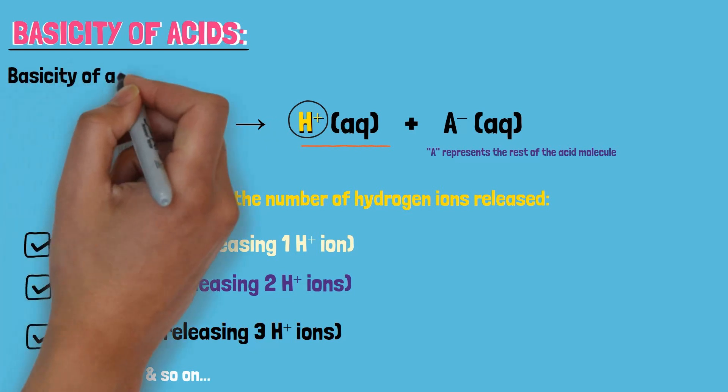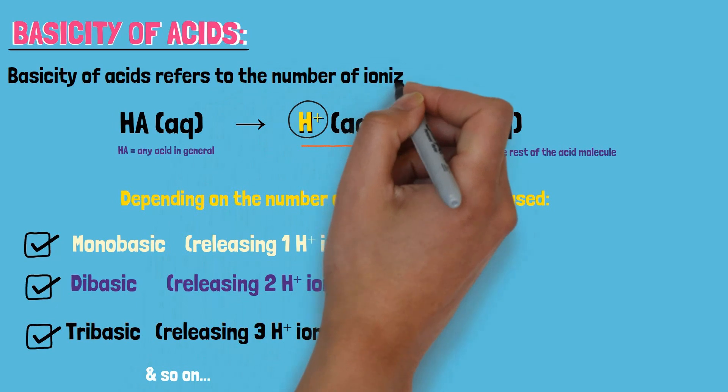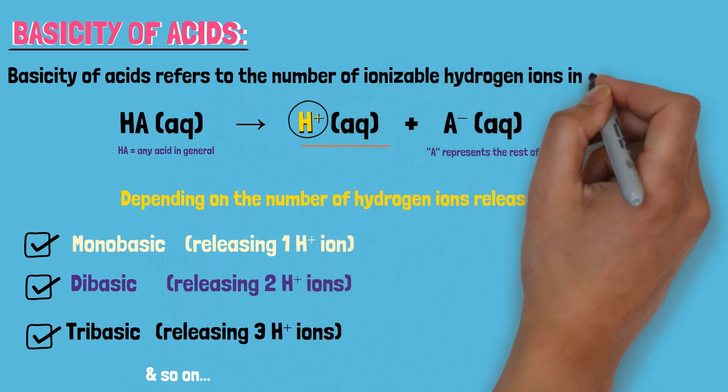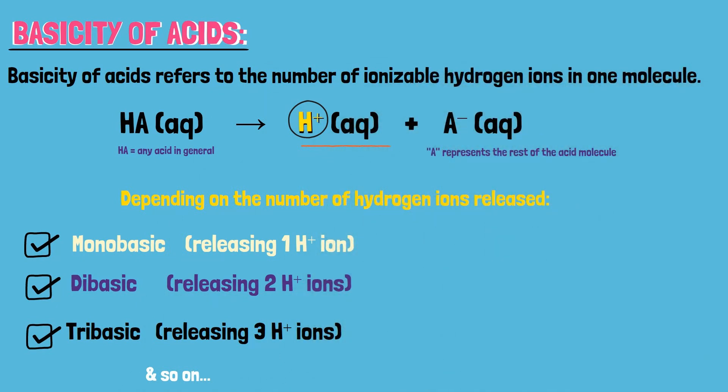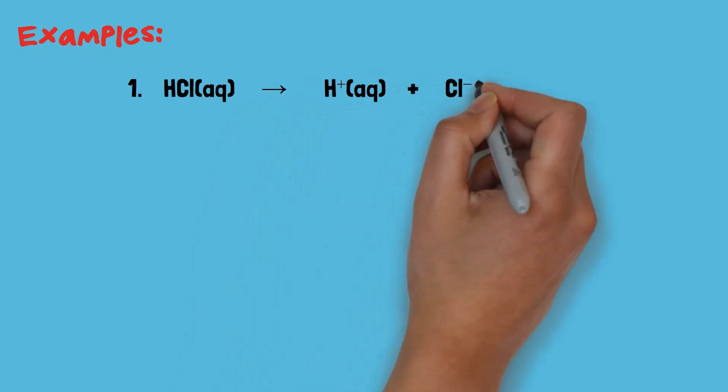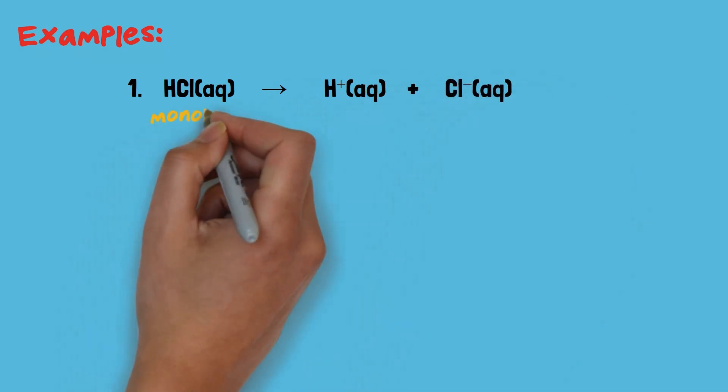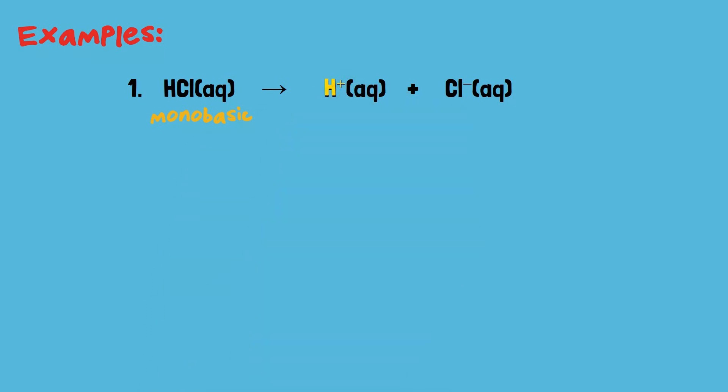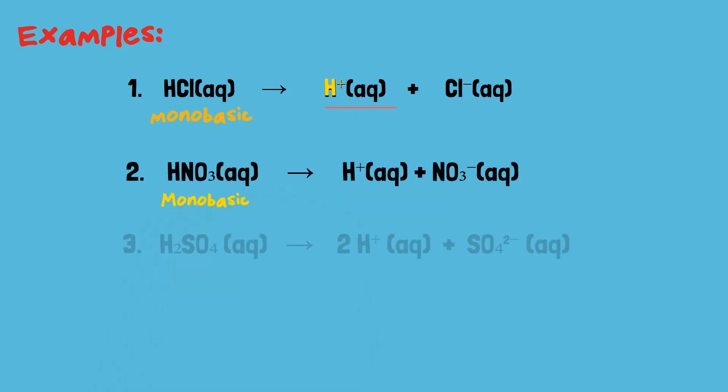So, the basicity of acid refers to the number of ionizable hydrogen ions in one molecule. Let us look at some examples. HCl, also known as hydrochloric acid, is monobasic because it releases one hydrogen ion in an aqueous solution. Nitric acid is also monobasic.